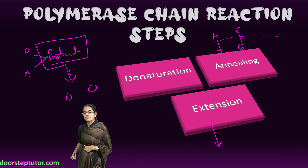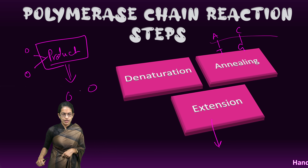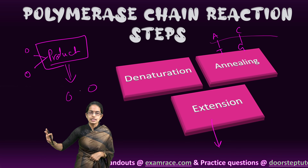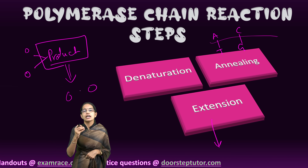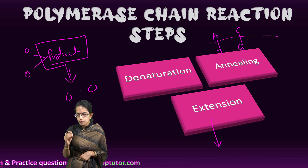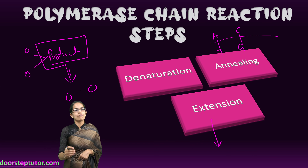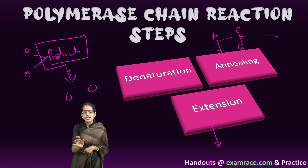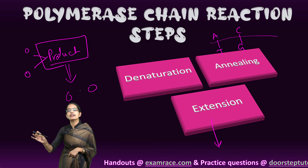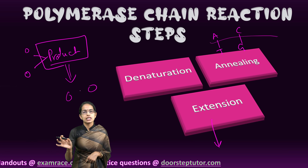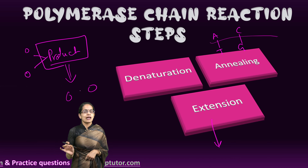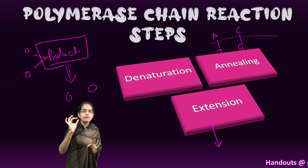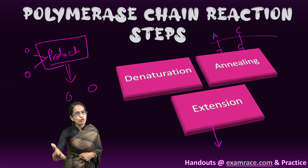To identify whether the PCR process is done correctly, there is a separate process known as electrophoresis, which we will understand in a separate class. The commonly used process is agarose gel electrophoresis, through which we identify whether the products are correctly formed. The product of each reaction becomes the substrate for the next reaction in DNA amplification — and therefore polymerase chain reaction is a very important component for amplifying DNA to identify the presence of virus in COVID-19 RT-PCR testing.